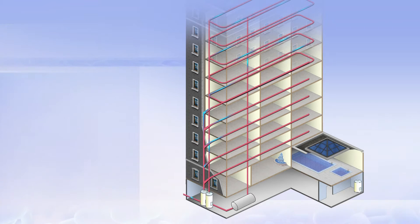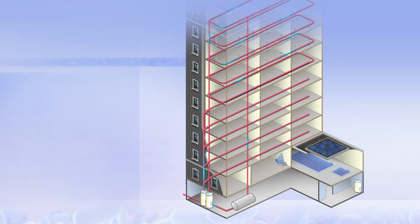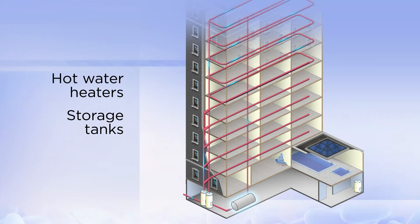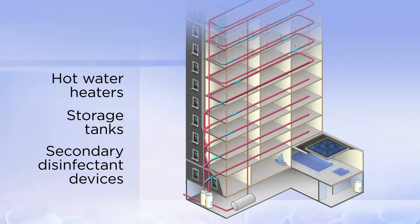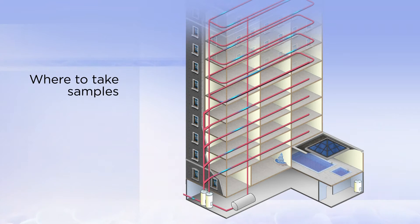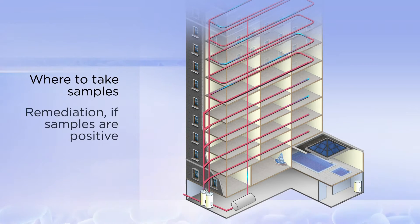The building owner or manager is responsible for maintaining water quality within the premise plumbing. It's important to understand where and how water flows through the building — through hot water heaters, storage tanks, and secondary disinfectant devices to the points of use — because these processes all play a role in bacterial growth. Having an understanding of the way the premise plumbing is configured and maintained will help you make decisions on where to take samples for Legionella testing and give you an idea of the extent of remediation needed if samples are positive.